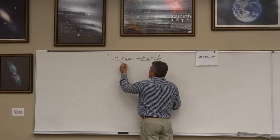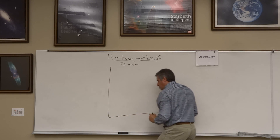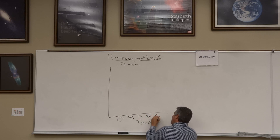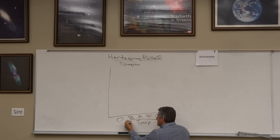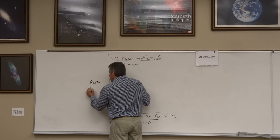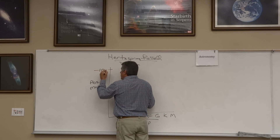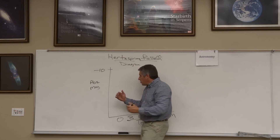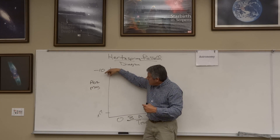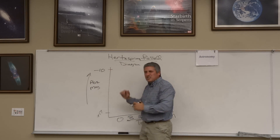They put together the Hertzsprung-Russell diagram to determine if there was a correlation. On one axis is a star's temperature, measured using Annie Jump Cannon's O, B, A, F, G, K, and M classification, increasing in one direction. On the other axis is brightness, measured as absolute magnitude — ranging from about -10 for the brightest stars down to +17 for the dimmest. Remember, for every one magnitude, a star is two-and-a-half times dimmer.